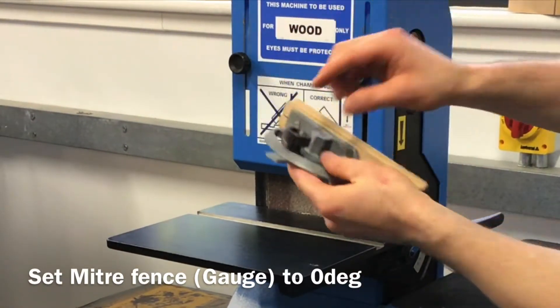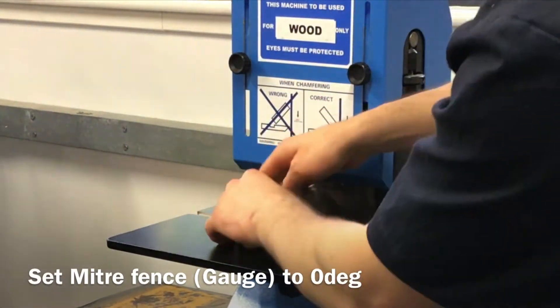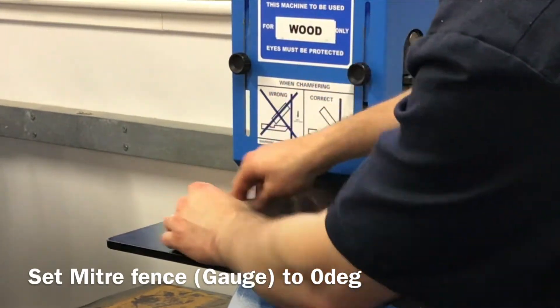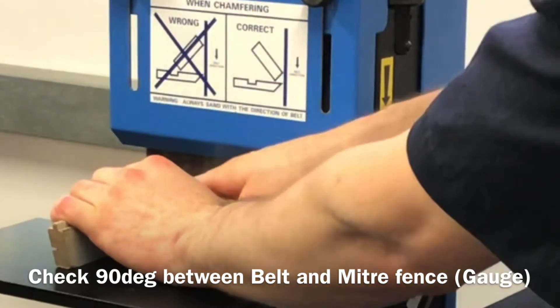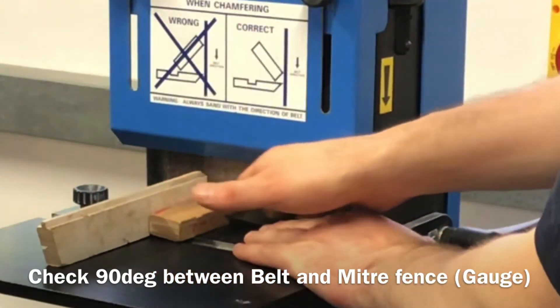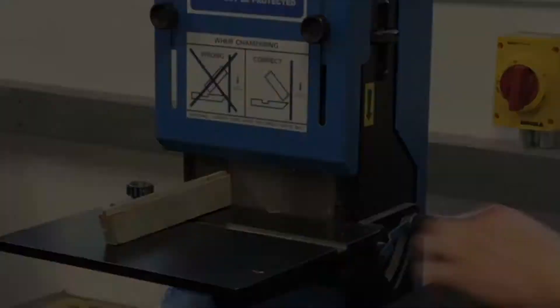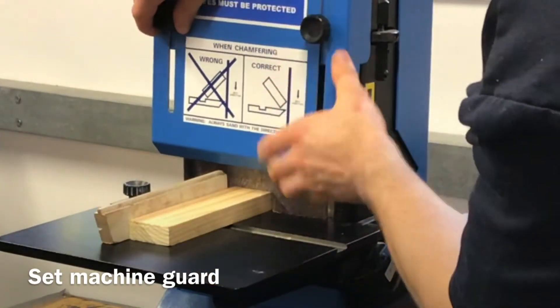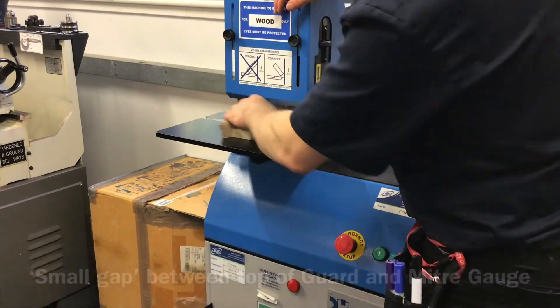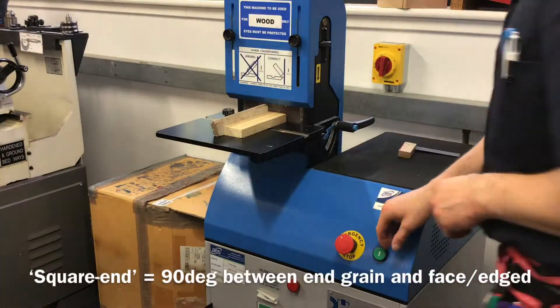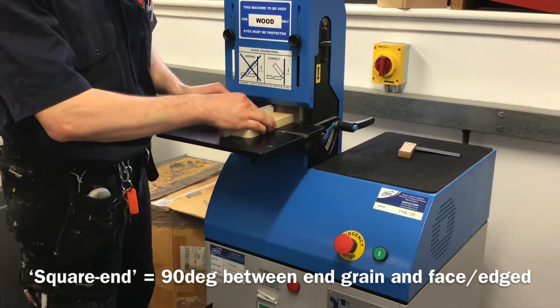You're going to need to set your miter fence to zero and check that there's 90 degrees between the edge of the miter fence and the face of your band facer. Just check my guard as well. I'm looking to run this back and forth to check the edges are all actually square.